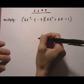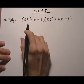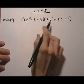Section 5.3, number 5. Here we want to multiply two polynomials and each of them have three terms.